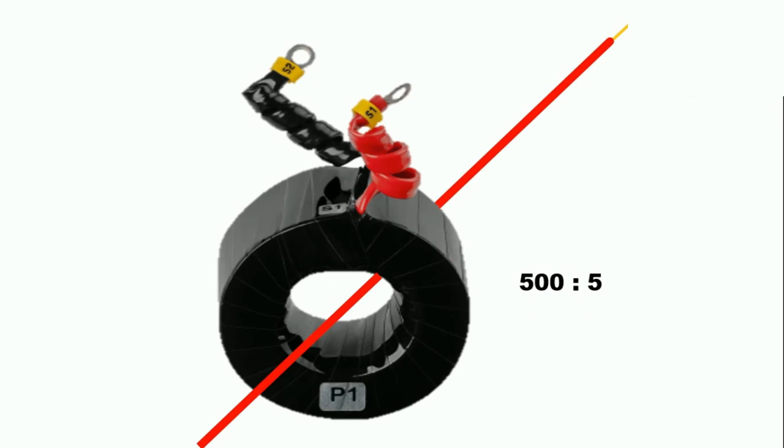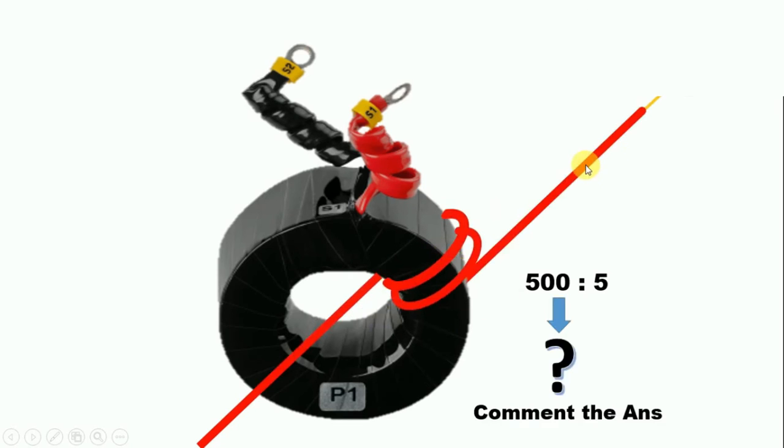Friends, I have a question for you. You have to tell me the answer in the comment box. The question is: the CT ratio is 500 by 5, and you made two turns of wire around the CT. What you have to tell me is, how much is the ratio reduced?